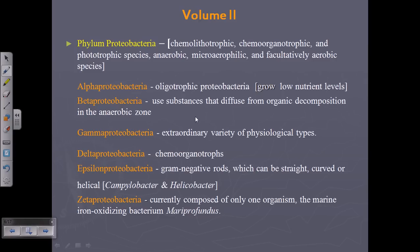Most Proteobacteria are oligotrophic or chemo-organotrophic, with very few being phototrophic — they depend mostly on organic or chemical materials for energy. The zeta Proteobacteria are currently composed of only one organism and are totally new to Bergey's Manual. The marine iron-oxidizing bacterium in this phylum — Mariprofundus — is the only bacterium in the zeta Proteobacteria phylum and can oxidize iron.